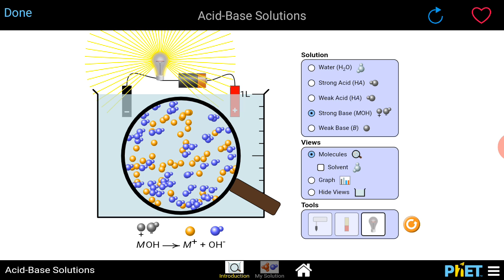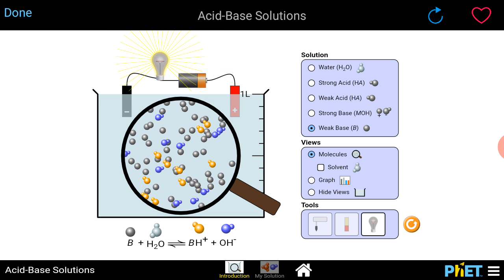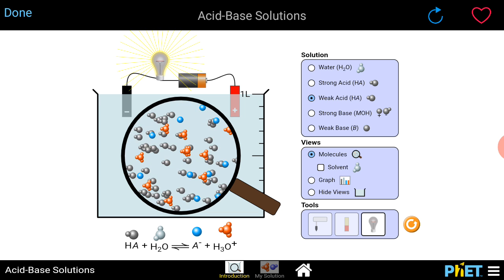Now what happens if we put it in the weak base? It's shining less brighter like the weak acid. And the water has less molecules in it, so it shines less brighter.